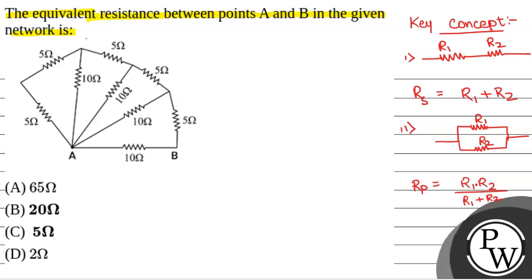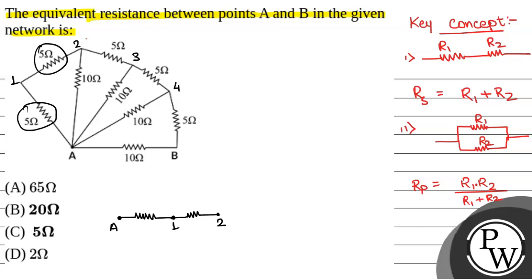Now, we will name the points as 1, 2, 3, 4, and B. We can see there is a resistor between A and 1, that is of 5 ohm. Then there is a resistor between 1 and 2, that is again of 5 ohm. And there is a resistor between A and 2, that is of 10 ohm. So these two are of 5 ohm, 5 ohm, and this one is of 10 ohm.